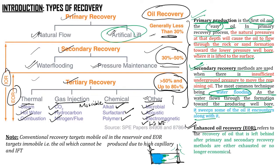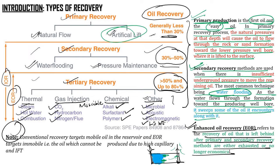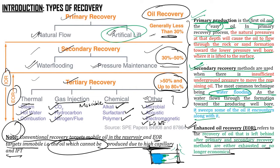Enhanced oil recovery refers to the recovery of oil left behind after primary and secondary recovery processes, which are either exhausted or no longer economical. A very important point is that conventional recovery targets mobile oil in the reservoir, while EOR targets immobile oil — oil which cannot be produced due to high capillarity and IFT.